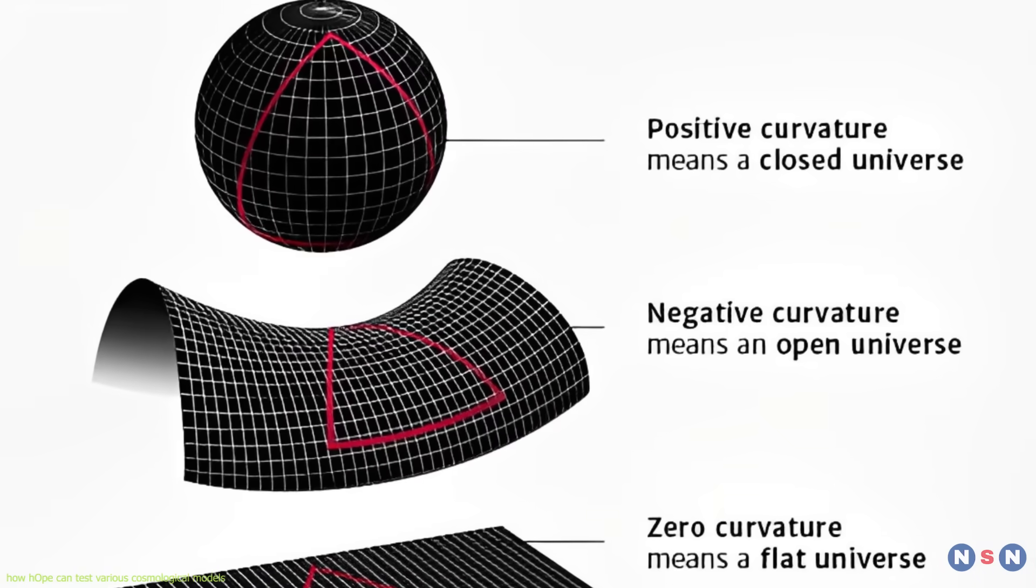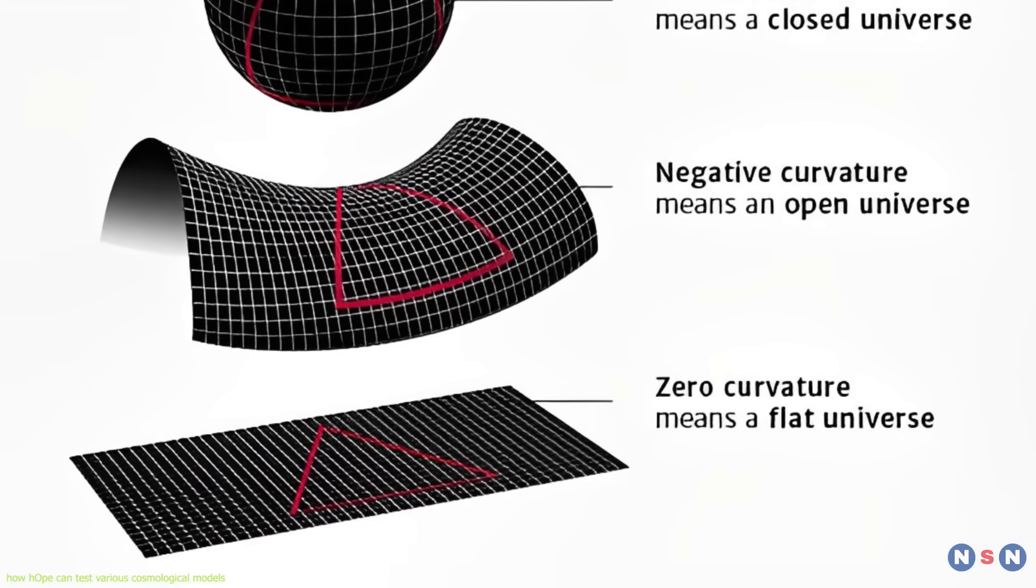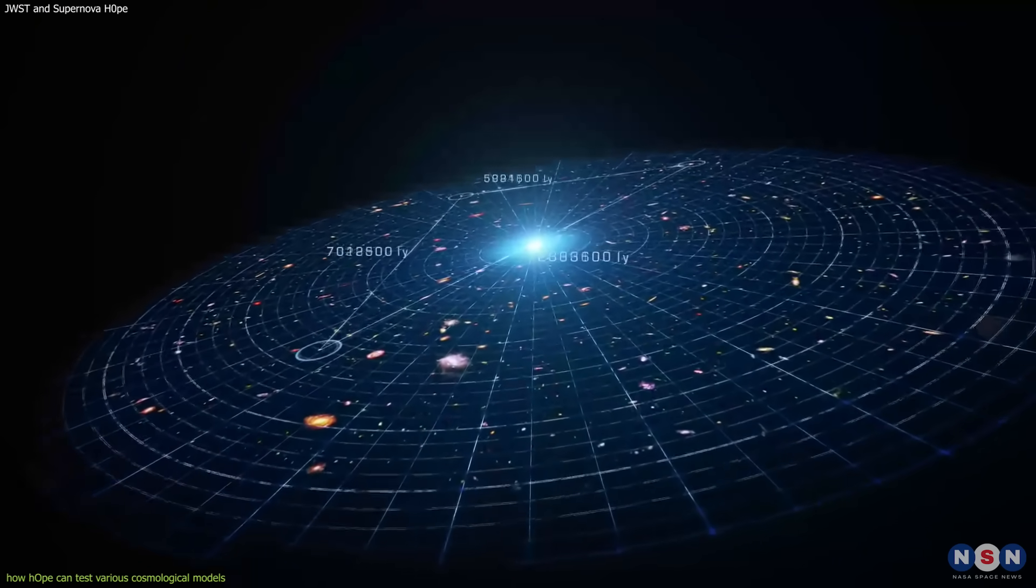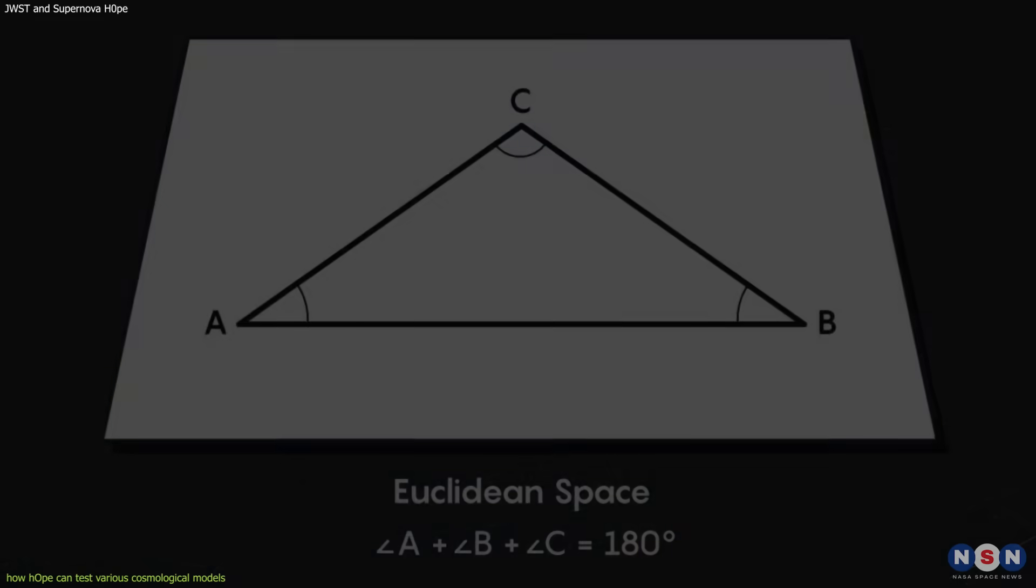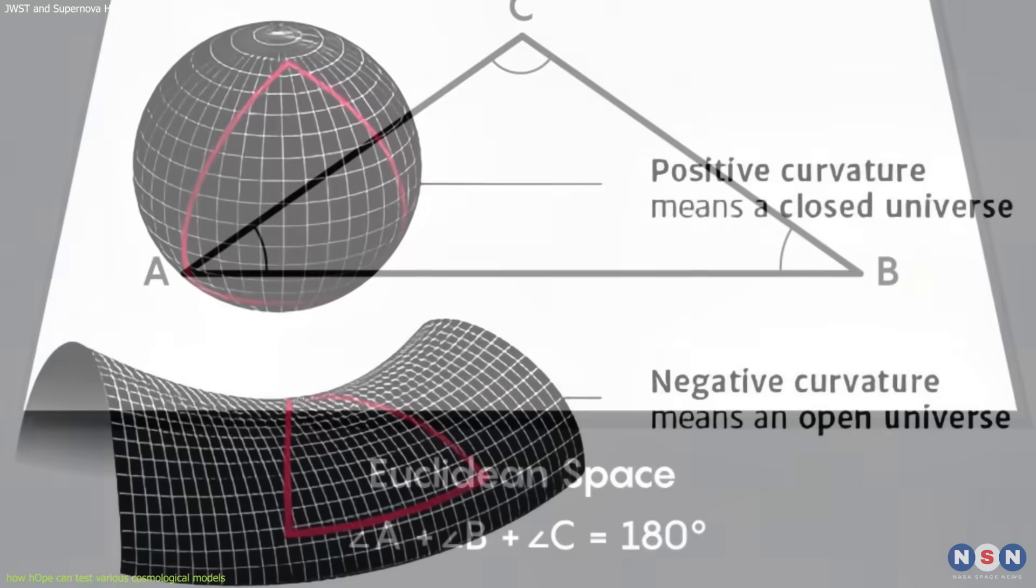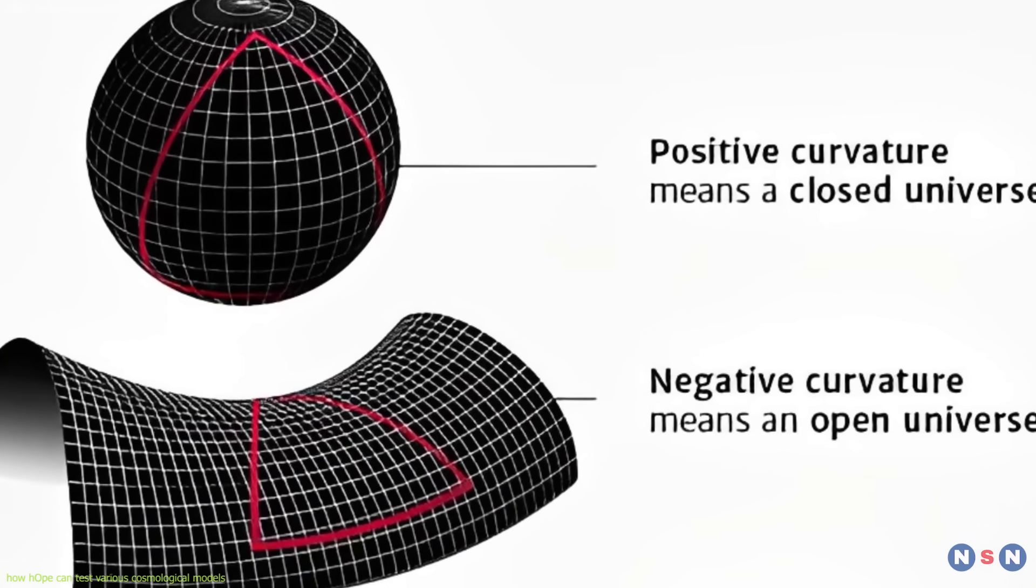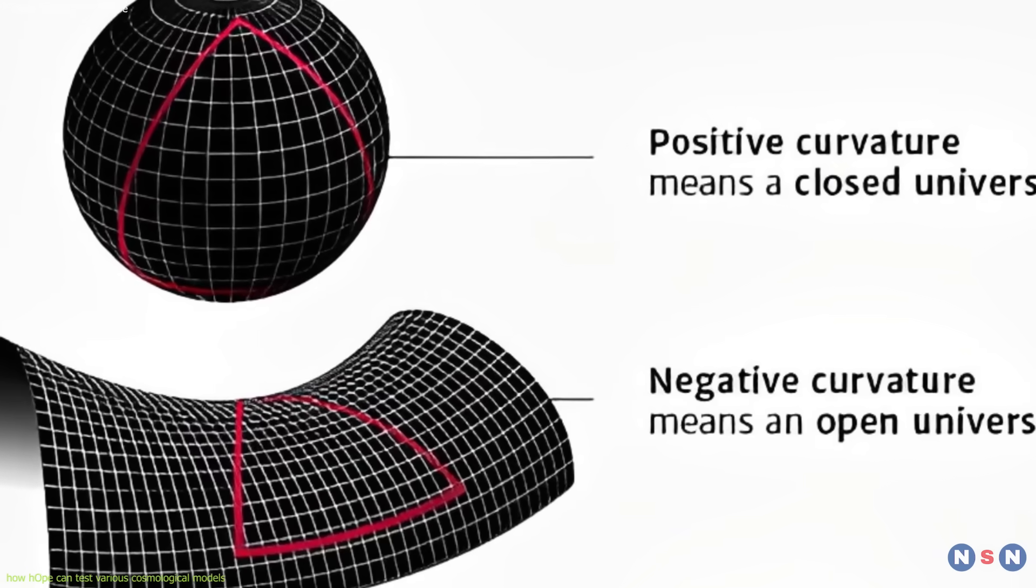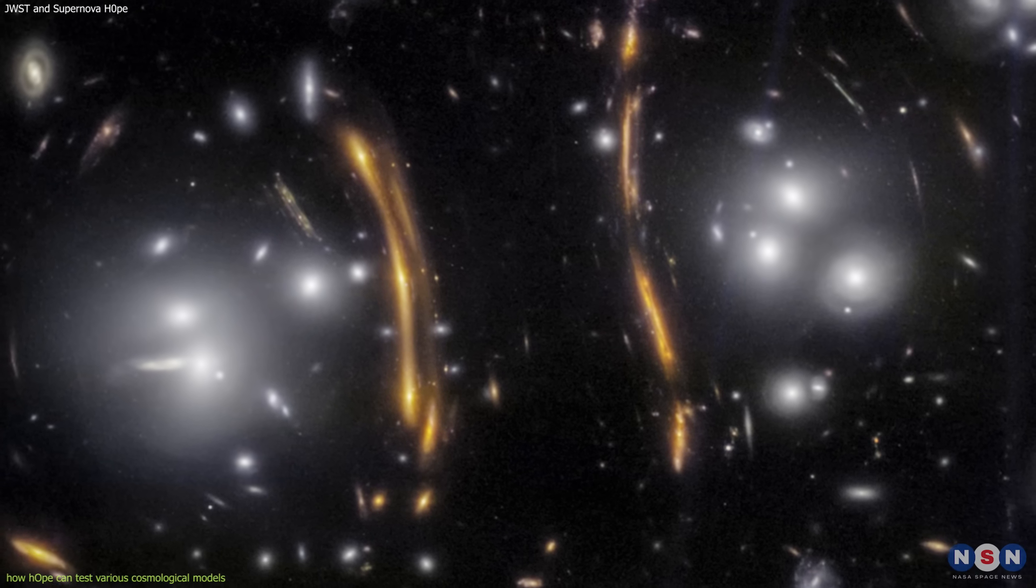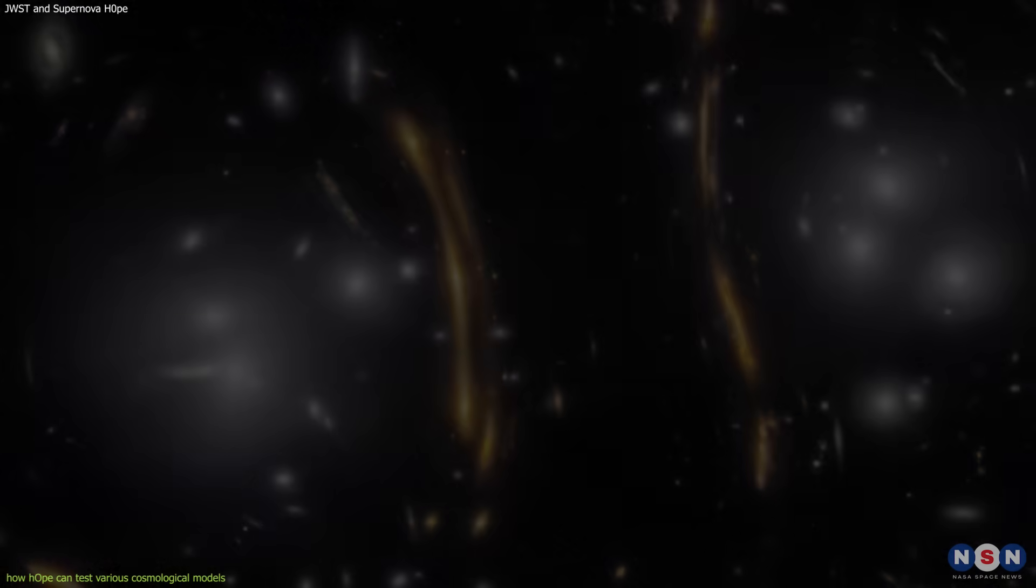Another parameter is the curvature of the universe, which describes its shape and geometry. The simplest model of the universe assumes that it is flat, which means that parallel lines never meet and that the angles of a triangle add up to 180 degrees. But other models allow the universe to be curved, either positively, like a sphere, or negatively, like a saddle.